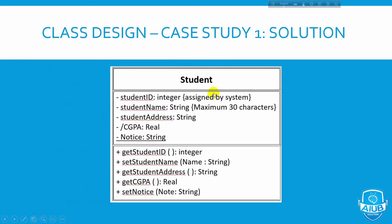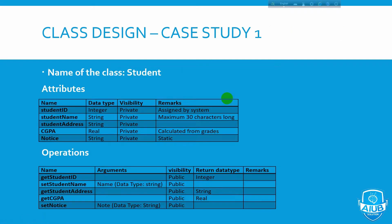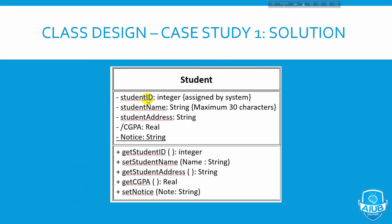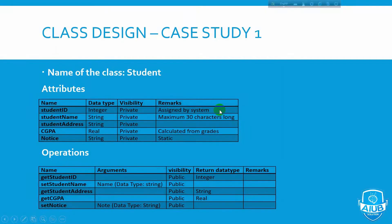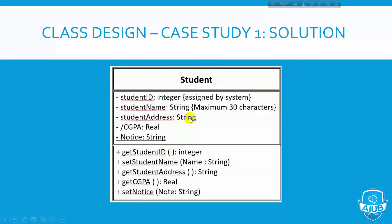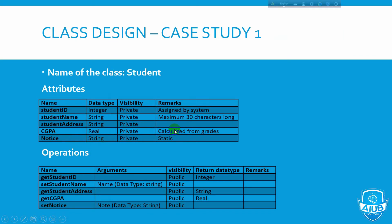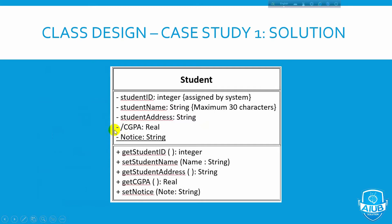Creating the Student type class. Attributes include: student ID (minus, integer), name (string), and student address (string) — private, calculated from grades.